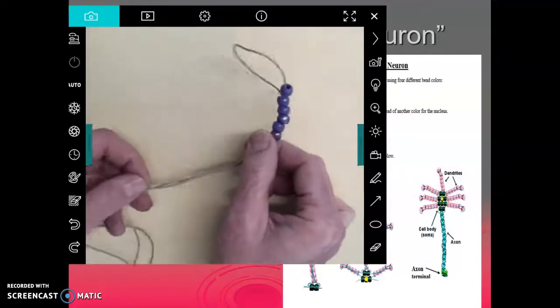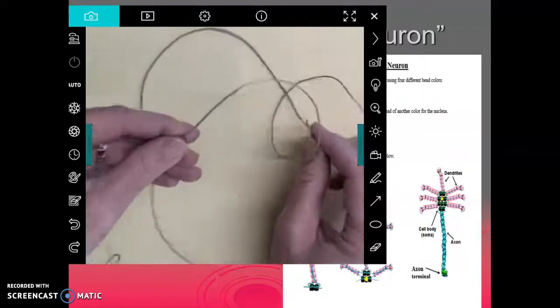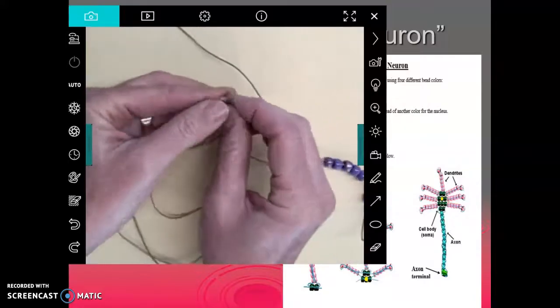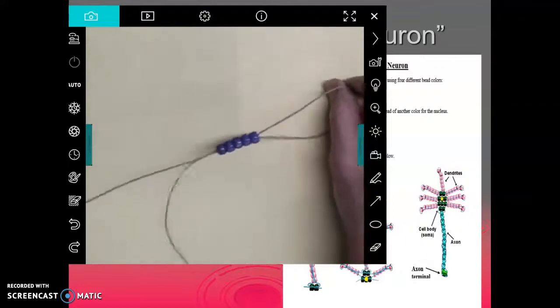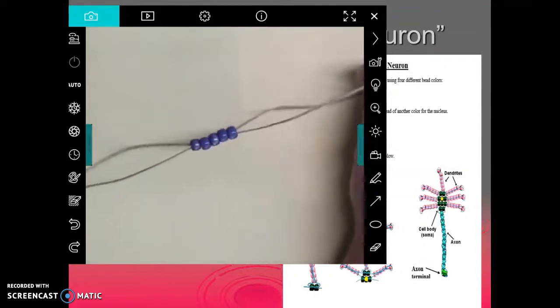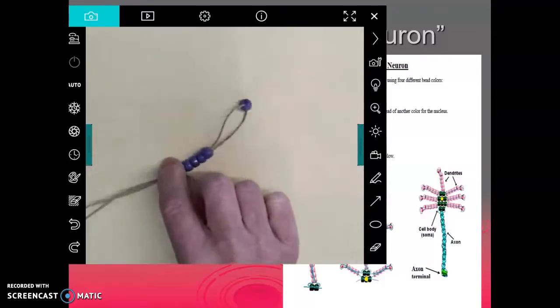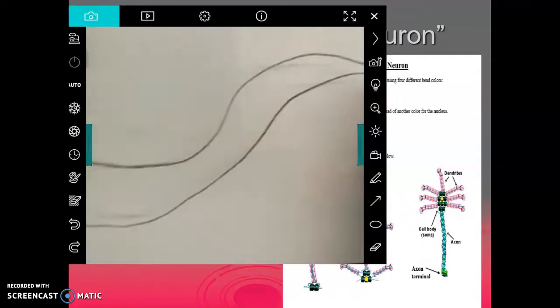And then what you do is go ahead and move all the way up to the end of your string, match up the two ends here, and then just pull down here until it's even. And pull all the way down here and you've made your first dendrite.